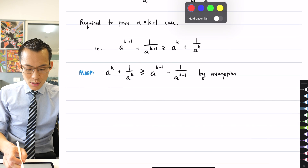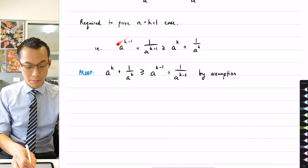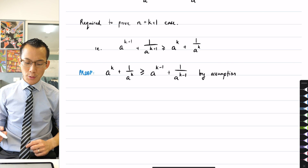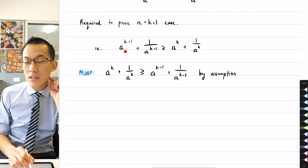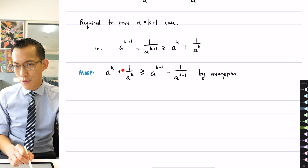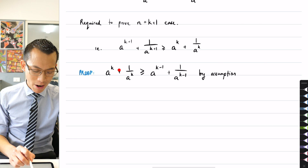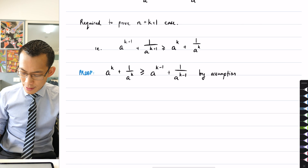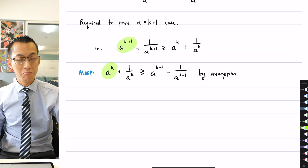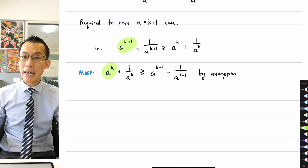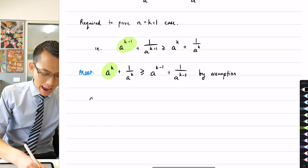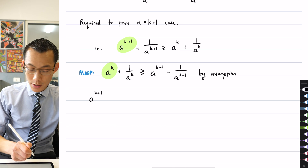What I want to do is try and get this toward something that looks like the k plus 1 case — that's where I'm headed. The most straightforward thing to do is to say: I've got an a to the k, and I want it to look like a to the k plus 1. So I'm going to multiply everything through by a, which will give me, with my index laws, a to the k plus 1 in the first instance. Just have a careful look at what happens to all our terms. If I multiply by a, then it appears on the numerator there.